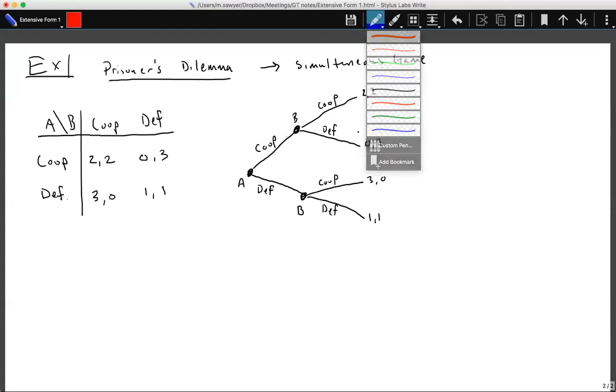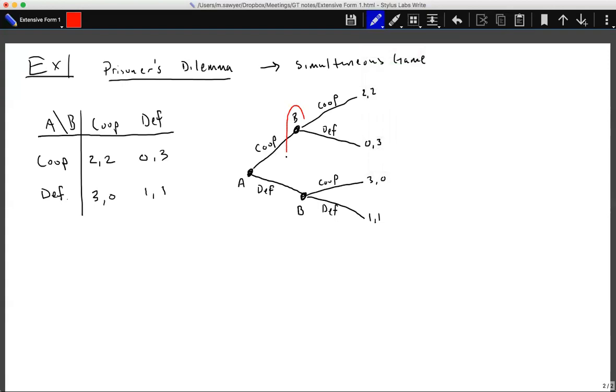So in this sense, we have the information set here indicated by circling the two vertices such that player B does not know what player A has chosen. So the information set indicates on the extensive form that player B does not know player A's choice.